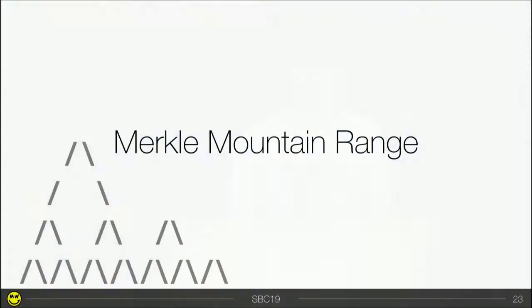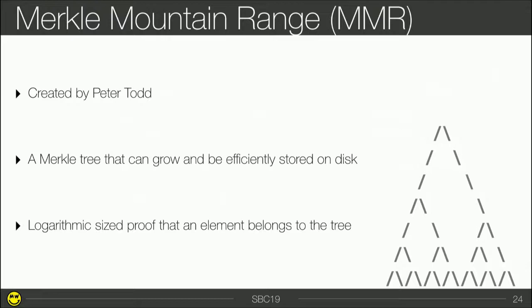The first building block is Merkle Mountain Ranges. They are really important for Grin and were created by Peter Todd. A Merkle Mountain Range is a Merkle tree that can grow and be efficiently stored on disk — a really fast data structure. You can also generate a logarithmic-size proof that an element belongs to the tree. In Grin, this building block is used to store kernels, outputs, and range proofs. It enables fast sync — downloading the state of the blockchain — and provides a unique representation of the unspent transaction output set, so you can prove the existence and unspent-ness of any output.